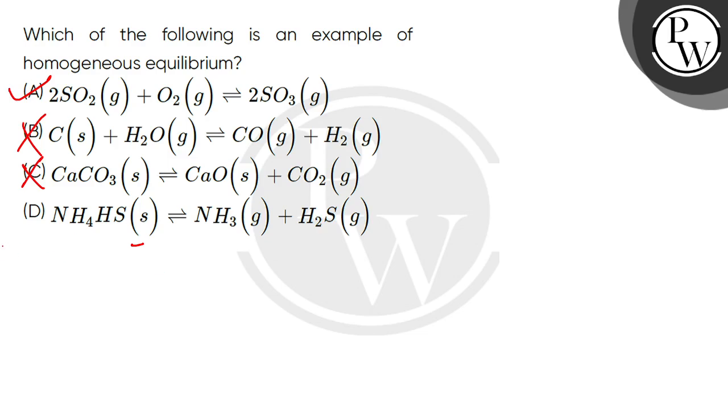Again, there are two types of phases, so what will happen? It will be a heterogeneous equilibrium, so D option is not possible.